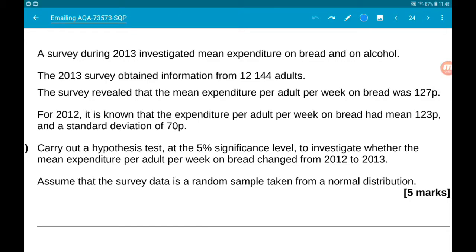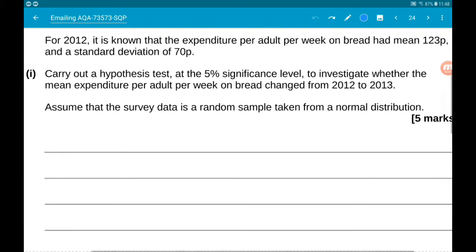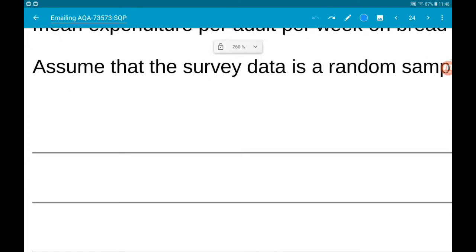Okay, first up then, let's set up our hypotheses. So our null hypothesis is that the mean didn't change. So the mean mu stays as 123p.